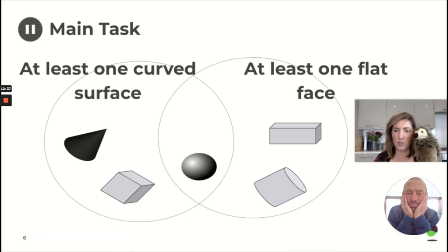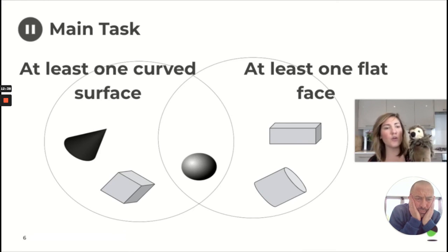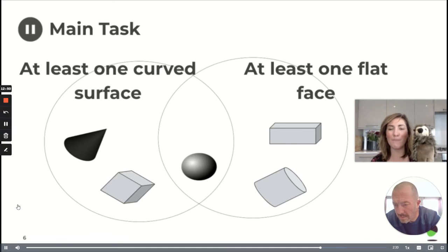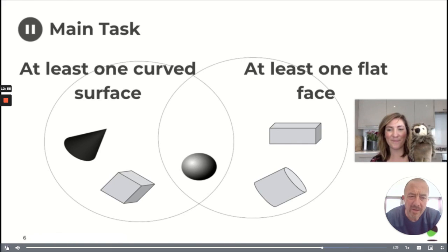So we want you to have a little bit of a look and make sure that all of the shapes are in the right spot. Okay, so you're going to pause the video. You can go find this sheet in the worksheet and have a really close look. And if you see a mistake, you need to tell us why it's a mistake. All right, pause the video and come back and we'll discuss it when we're ready.